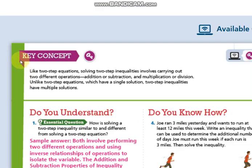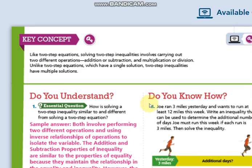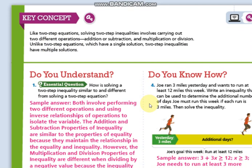So the main idea or key concept, like two-step equations, solving two-step inequalities involves carrying out two different operations, addition or subtraction, multiplication or division. Unlike two-step equations which have a single solution, two-step inequalities have multiple solutions. Because of that, we will present that on the number line.